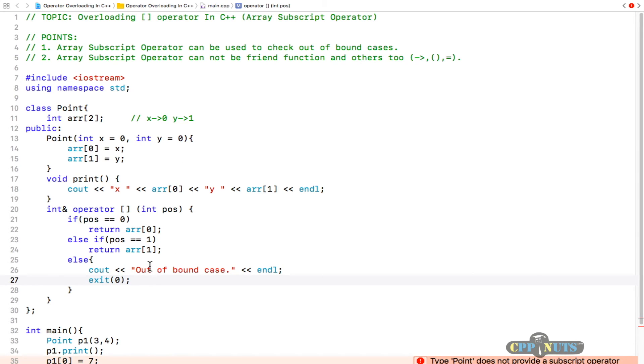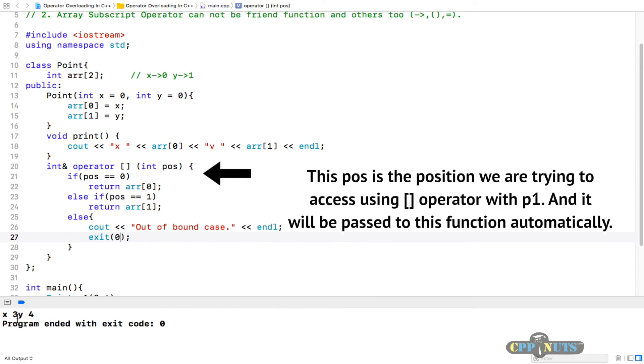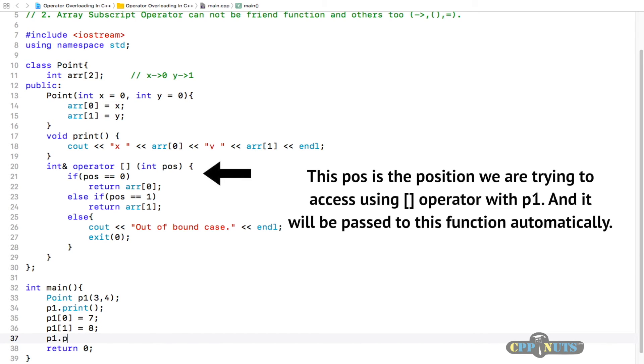Let's quickly compile this again. Build successful. The output is okay, but we didn't print that.